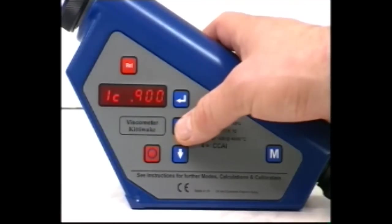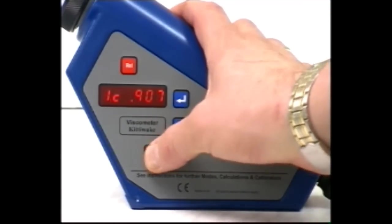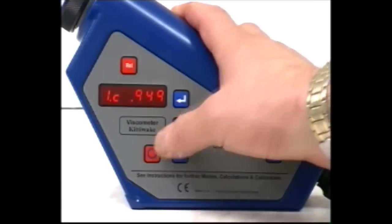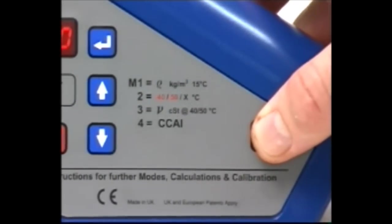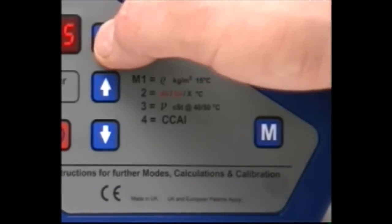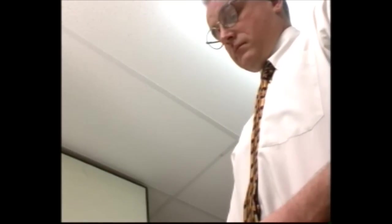To change this, select mode 1 and use the speed and arrow keys to input a known density. Advance to mode 5 and press Return to recalculate the centistokes value with this new density.